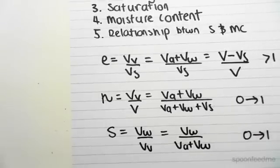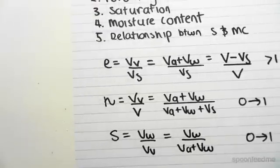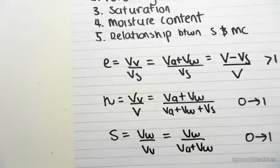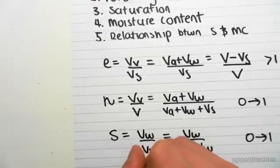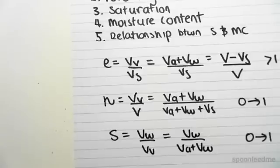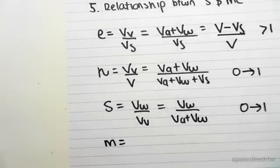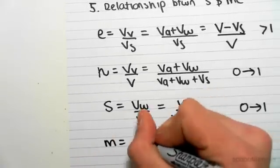And the next thing we're going to be looking at is the moisture content. So the moisture content is given by little m. This should not be confused with mass. In soil mechanics, little m is moisture content, which is the...